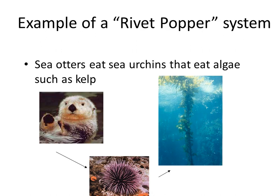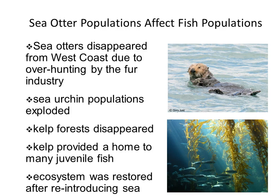An example of a rivet popper system: sea otters eat sea urchins that eat algae such as kelp, and they are specialists. Sea otters disappeared from the west coast because of overhunting for the fur industry. Sea urchin populations exploded, kelp forests disappeared. Kelp provided a home to many juvenile fish. The ecosystem was restored after reintroducing the sea otter.